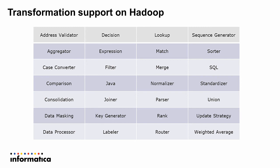Data quality transformations are also supported, so address validation, parsing, standardization, and consolidation can all run on the Hadoop cluster — which will be covered in the data quality on Hadoop module. A common question is whether Hive UDFs are supported. They are not directly, but you can leverage the Java transformation to make calls to Hive UDFs as a workaround.